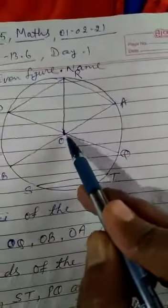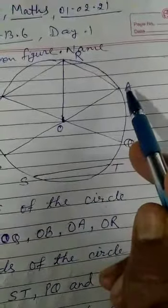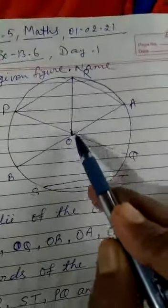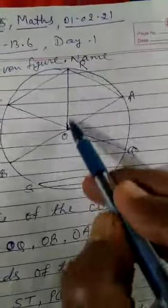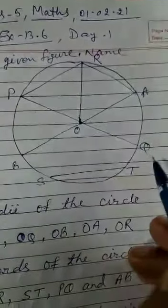Like OA - center is O and the line joining to point A. So OA is the radius. Here you see OR, OP, OB, and OQ.